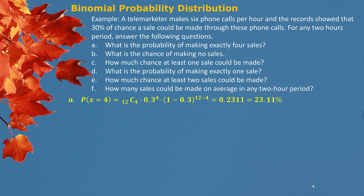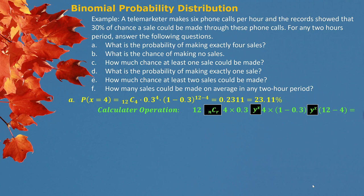Part A: What is the probability of making exactly four sales? We observe four times success, so x = 4. Putting all the numbers into the formula: C(12, 4) multiplied by 0.3 to the power 4, multiplied by (1 minus 0.3) to the power (12 minus 4). The answer is 23.11%. If you use a calculator, you have the combination NCR button and the exponent button Y^X to compute this.